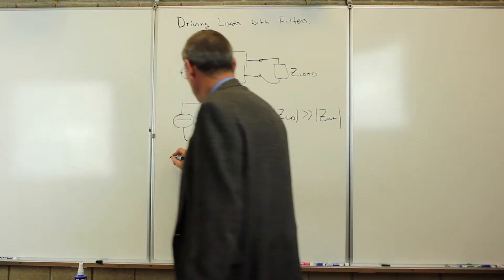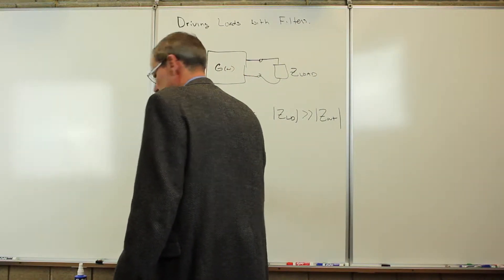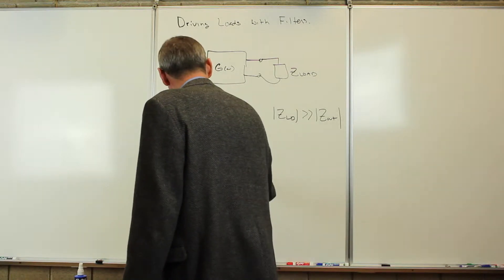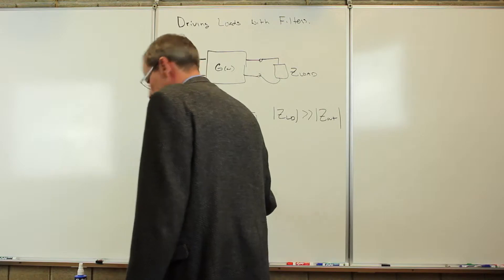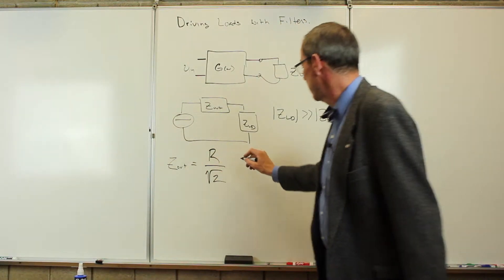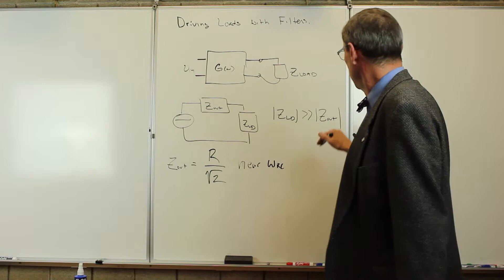Then we showed in the past that the output impedance is just simply the resistance over the square root of 2. It's the output near omega RC.